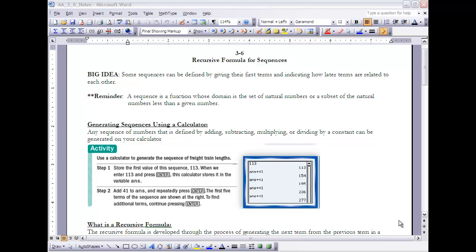First of all, let's make sure that we remind ourselves what a sequence is. A sequence, once again, is a function whose domain is the set of natural numbers, or the counting numbers, or a subset of that. So you can have a sequence that only has a domain from 1 to 10, or from 5 to 15, or 5 to 70. It really doesn't matter, but it's got to be a subset of the counting numbers or the positive whole numbers.